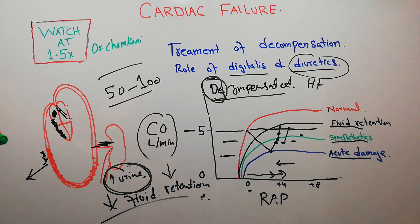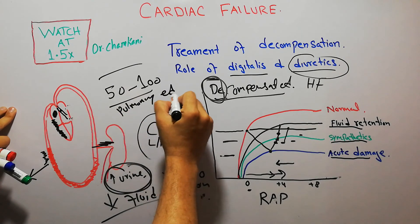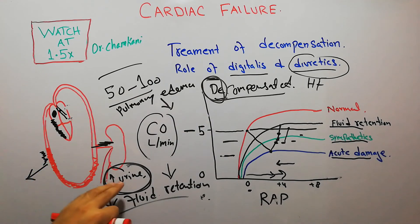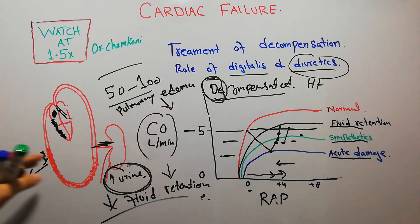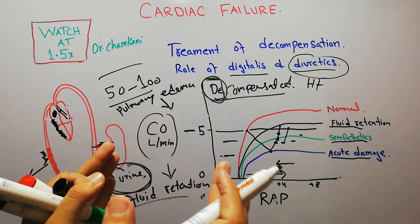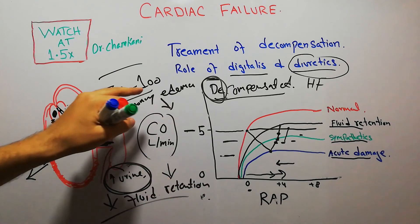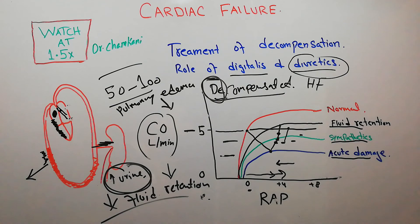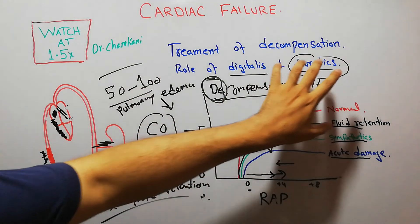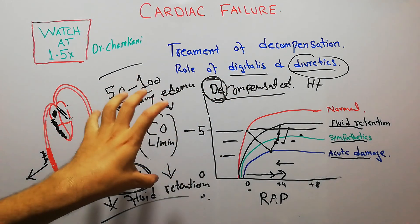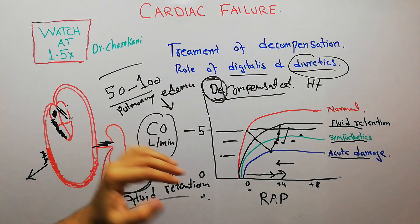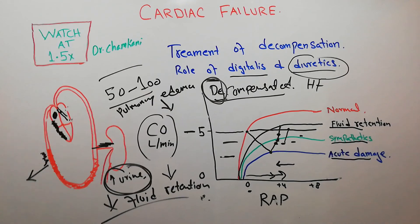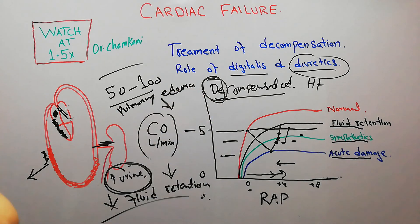By decreasing fluid retention, diuretics reduce the amount of fluid returning to the heart, lowering right atrial pressure and relieving the excessive stretching of the heart. They also help decrease pulmonary edema — the accumulation of fluid in the lungs that impairs blood oxygenation. With the help of digitalis, diuretics, and other medicines to be discussed in the heart failure section, the heart can recover and the patient can survive for years.